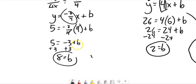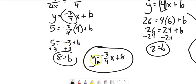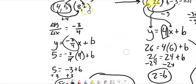So I know b, I know m. So my equation is y equals negative 3 fourths x plus 8. And that is the equation of the line that would go through both of those points.